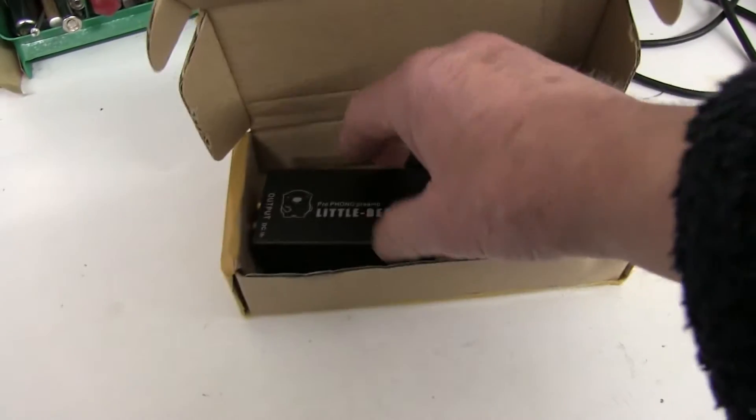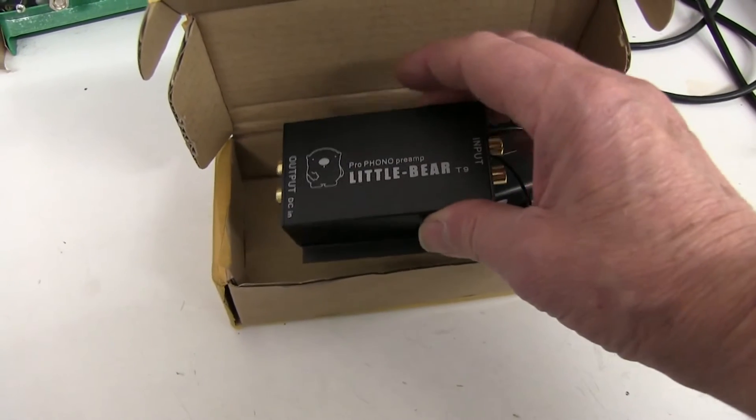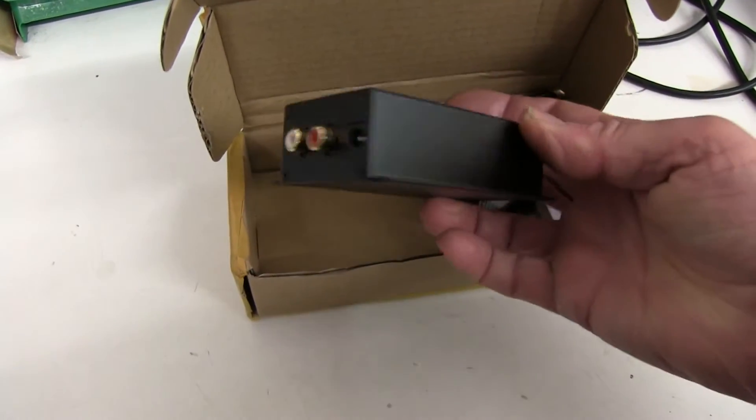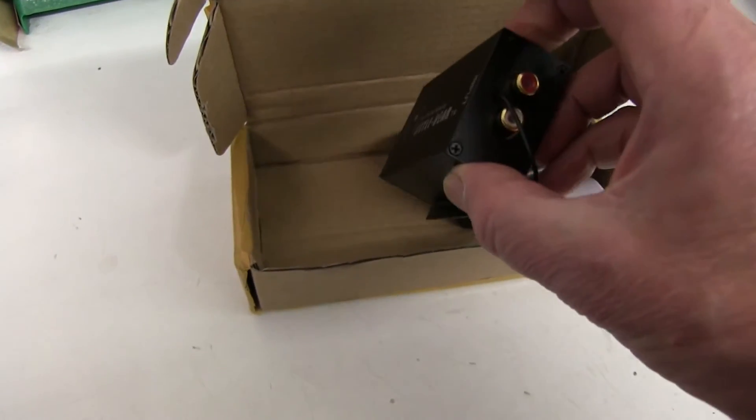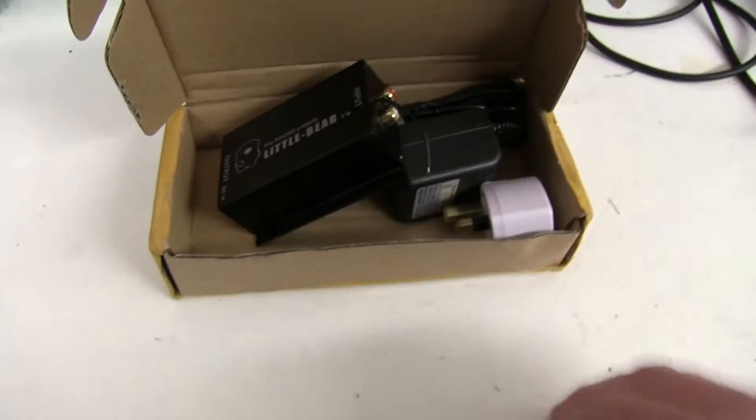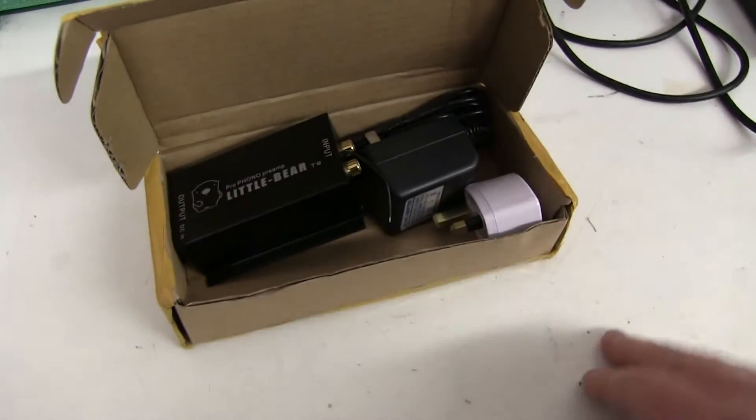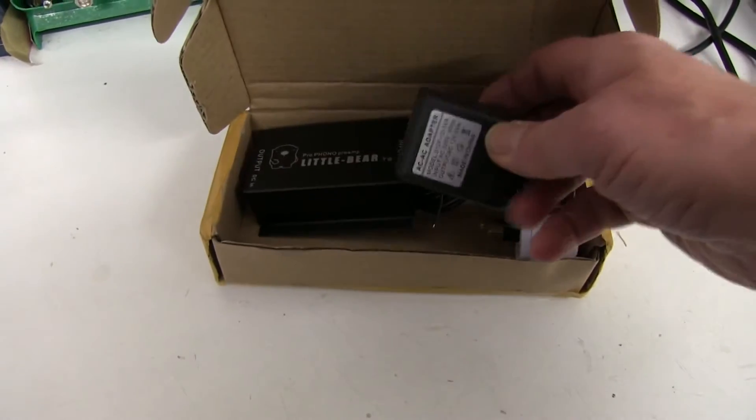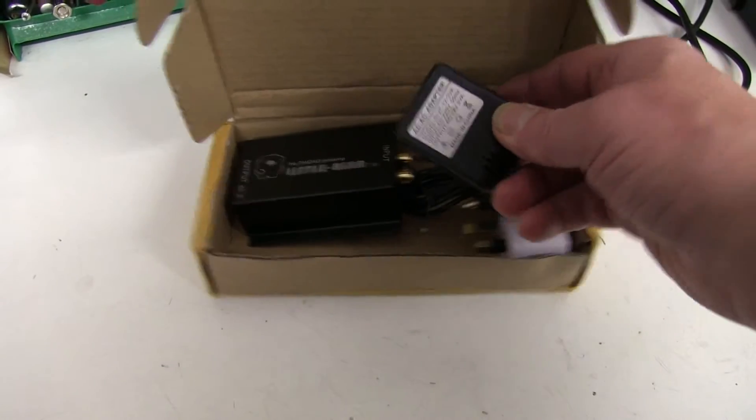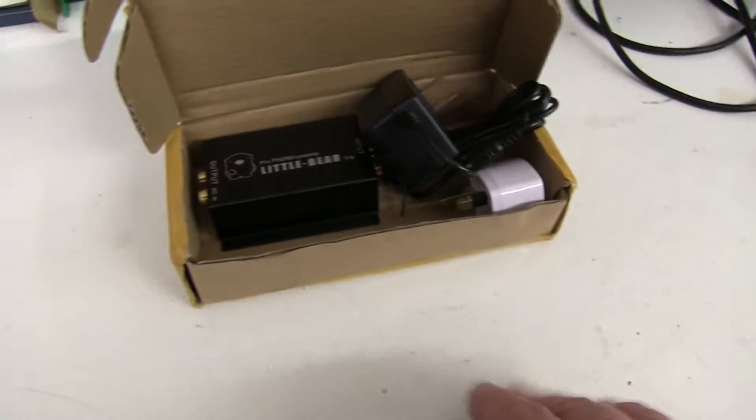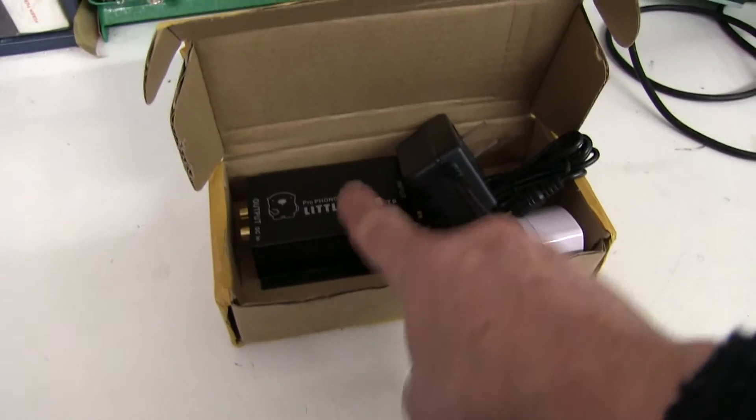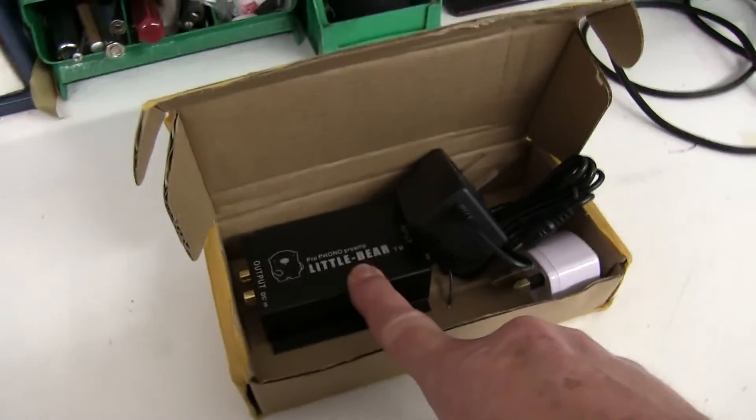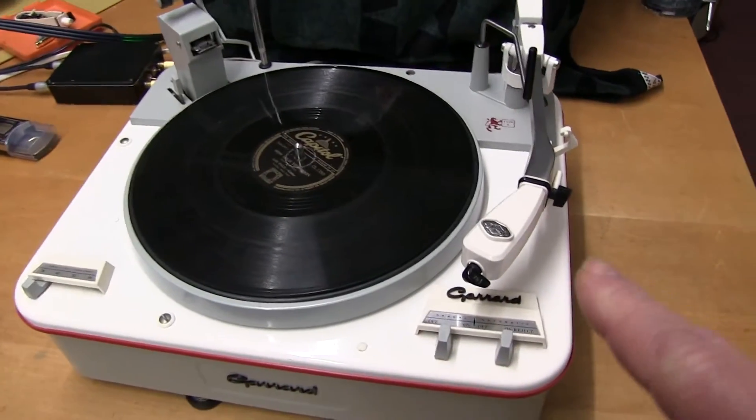Here's a RIAA stereo preamp all the way from China, less than 20 pounds UK sterling including postage. It comes with a little power supply as well, and I'm going to show you how to convert this into a high impedance buffer.